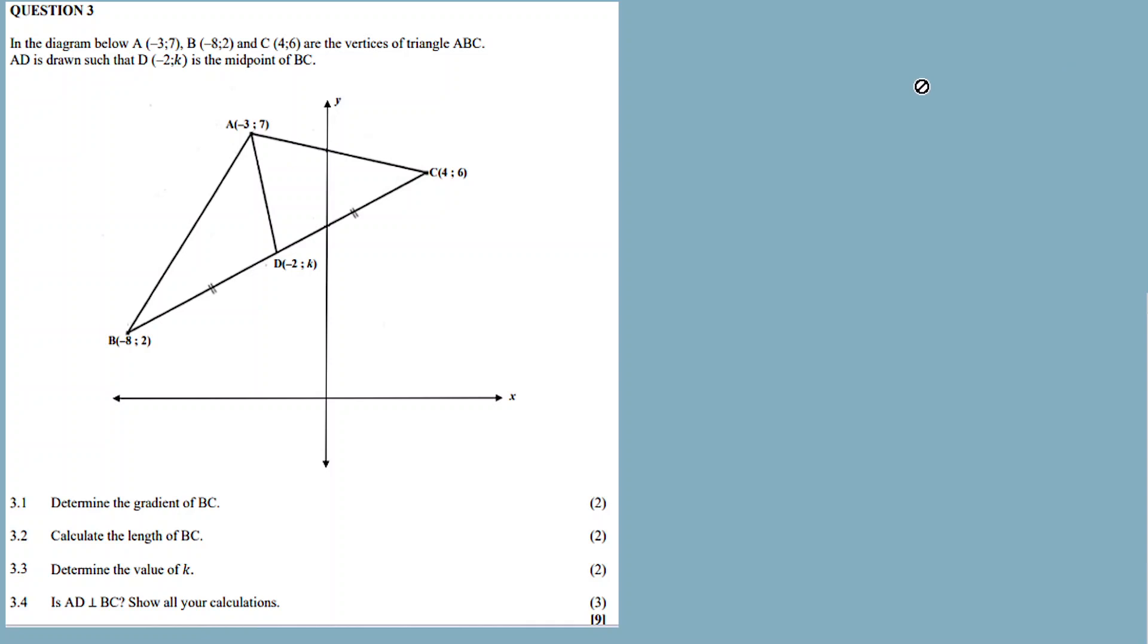Now 3.4. Is AD perpendicular to BC? Show all your calculations. We need to show that BC is perpendicular to AD. How do we show that? With perpendicular lines, whenever you multiply the gradients, you should get negative 1. Gradient of line 1 multiplied by gradient of line 2 should equal minus 1.